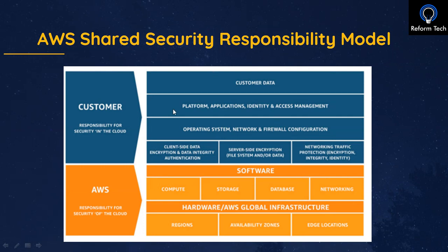AWS says that responsibility lies between both the customer and AWS. AWS takes care of the regions, availability zones, edge locations, as well as hardware and software — including compute, storage, database, and networking.